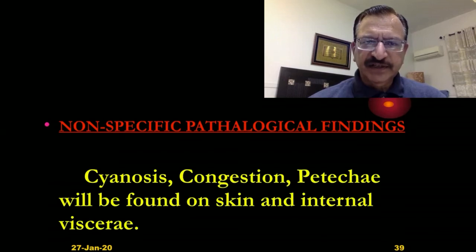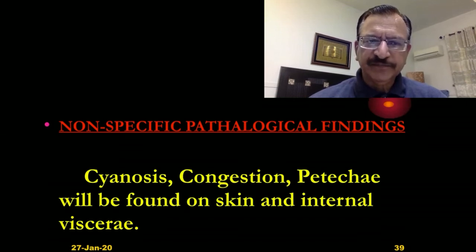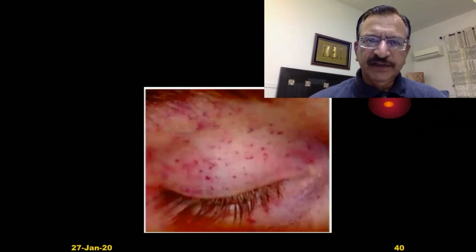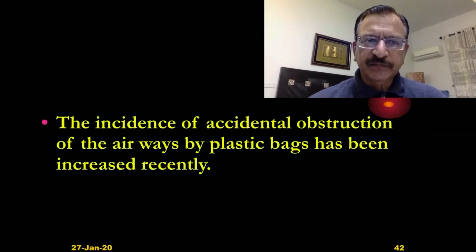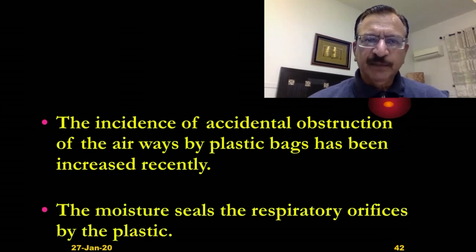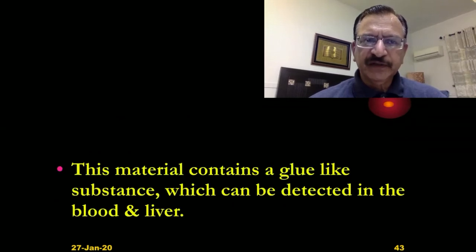The non-specific pathological findings will be cyanosis, congestion, and petechial hemorrhages — they will be found on the skin and internal viscera. Then smothering by plastic bags: the incidence of accidental obstruction of the airways by plastic bags has increased recently. The moisture seals the respiratory orifices by the plastic bag, and this material contains a glue-like substance which can be detected in the blood and the liver.